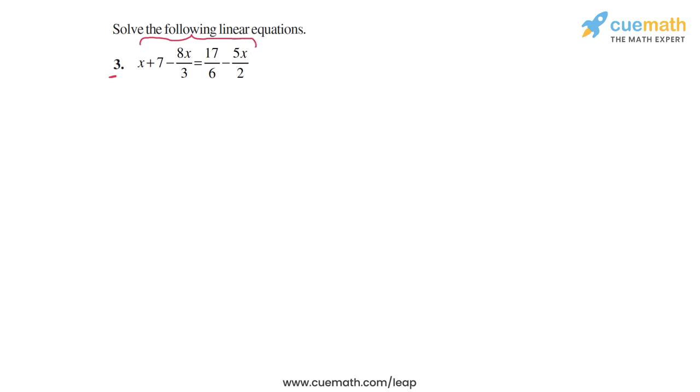Let's make our task easier by converting the fractional coefficients into integer coefficients by multiplying both sides of the equation by a suitable multiplier. We have 3 in the denominator here, 6 here, and 2 here, and the LCM of these three denominators is 6. So let's multiply both sides of the equation by 6.